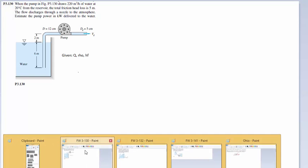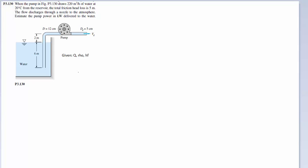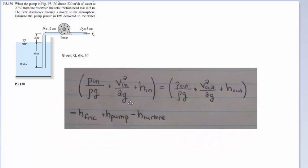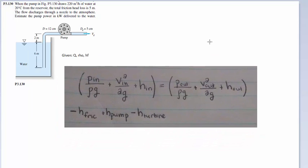The first thing you should do is write down Bernoulli's equation. This is the equation we ended with last time. Now that you know we have a pump and a friction head loss, there's no turbine, so that term is going to disappear.